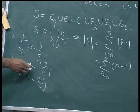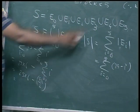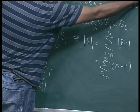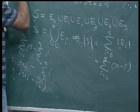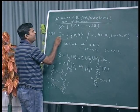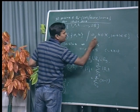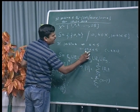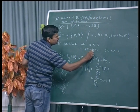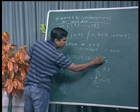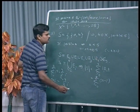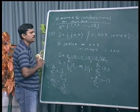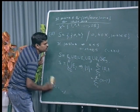If the condition is strictly less than 5, that is the third question: S is the set of all (a, b) such that mod of a minus b is strictly less than 5. Then k ranges from 0 to 4. Everywhere you simply change 5 to 4 and you will get the answer.